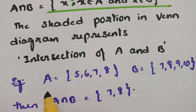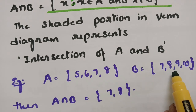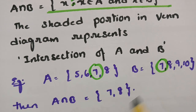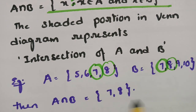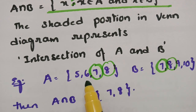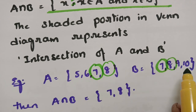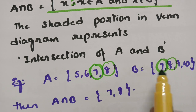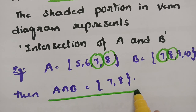For example, if A = {5, 6, 7, 8} and B = {7, 8, 9, 10}, the common elements are 7 and 8. So 5 is in A but not in B; 6 is in A but not in B; 9 is in B but not in A. So the common elements in both A and B are 7 and 8, and therefore A ∩ B = {7, 8}.